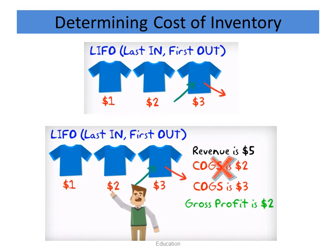LIFO stands for last in, first out. The company assumes the last unit brought into the store will be the first one sold. Again ignoring reality — the customer wants the second t-shirt — under LIFO we assume the last t-shirt brought in, which is the third t-shirt costing $3, is the first one sold. Revenue is $5, cost of goods sold is $3, so gross profit equals $2.